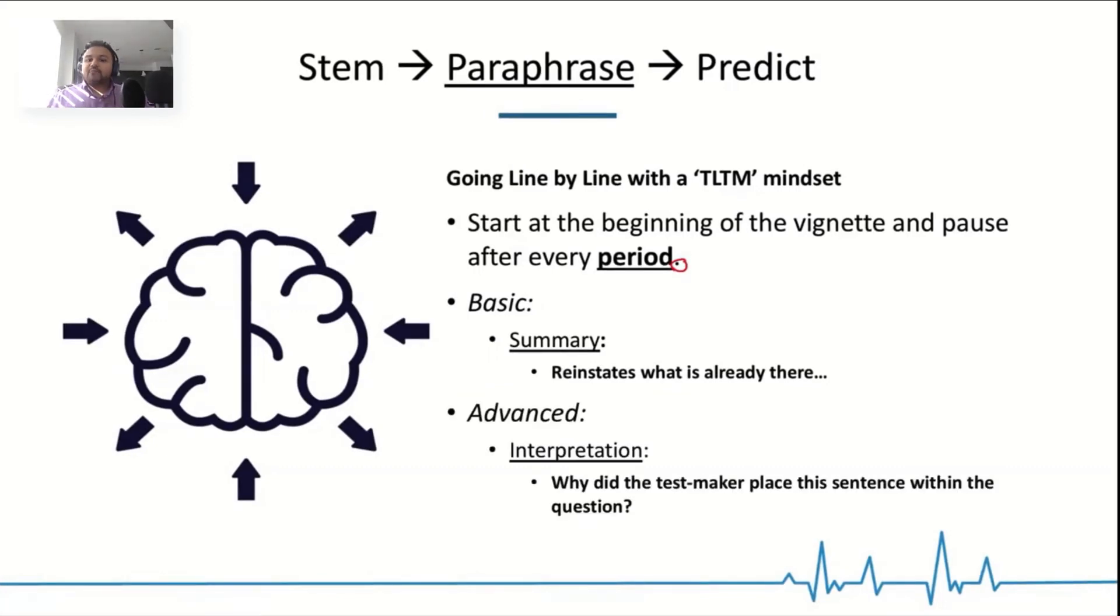But the actual advanced paraphrase is saying, why did the test maker place this within the sentence? A 50-year-old male presents with shortness of breath that has progressed for many years. Okay. Maybe they're talking about some cardiac issue or some lung issue that is chronic. Whoa. Now I'm trying to interpret why the test maker is putting each line in the test question.